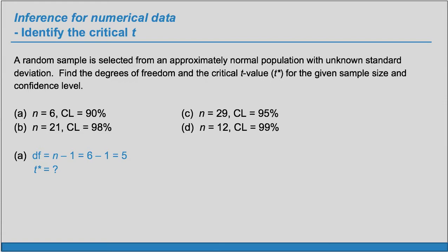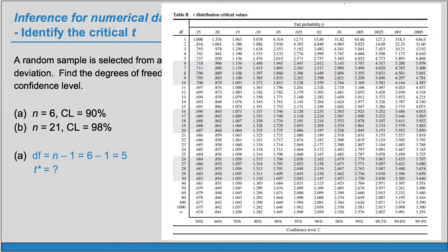And now to find the critical value, t-star, we'll need a t-table. So let's look at a t-table here. We have the degrees of freedom listed here. As the degrees of freedom go up, we know that the t-curve becomes closer to the z-curve, the normal curve.